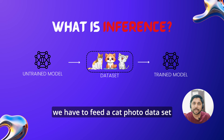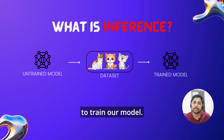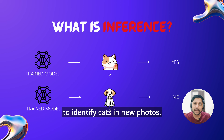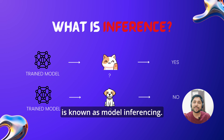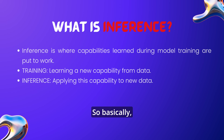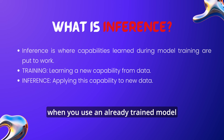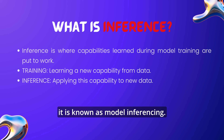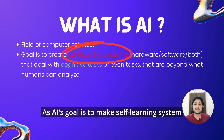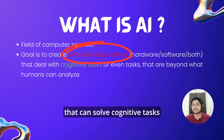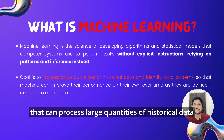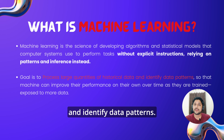As previously discussed, AI must train its model on a dataset to learn a new capability or feature. This process is known as model training. For example, if we want an AI model to detect whether a photo has a cat in it or not, we have to feed a cat photo dataset to train our model. When you use this already trained model to identify cats in new photos, that process is known as model inferencing.